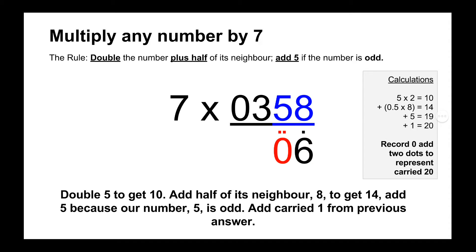The next number is 5, which is odd, so first of all we double it to get 10, and then we add half of its neighbor. Its neighbor is 8, so we do 10 plus half of 8, which is 4, equals 14. And then because 5 is odd, we add 5 onto 14 to get 19, and then we have to remember to add the carry 10 from the last result to get 20. So we record the 0 and then add 2 dots above it to represent the 2 carry 10s.